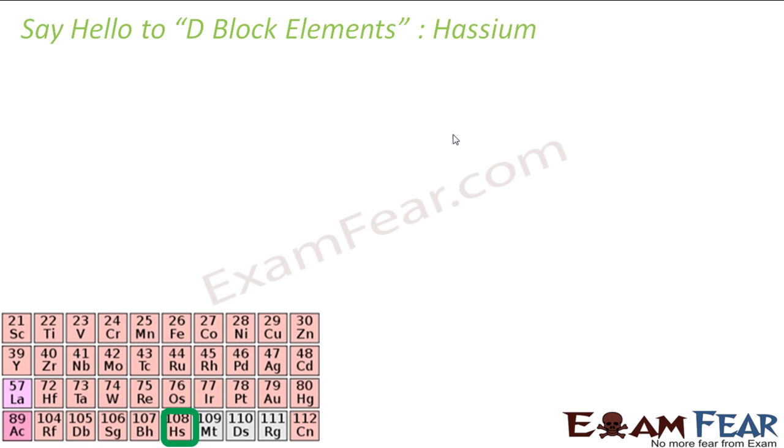Hassium, again this is also synthesized. This is named after German state Hesse because it was discovered in the lab located in this Hesse location. This is also radioactive. The most stable isotope has a half-life of almost 9.7 seconds. Other isotopes may have a half-life of half seconds also, very highly radioactive.